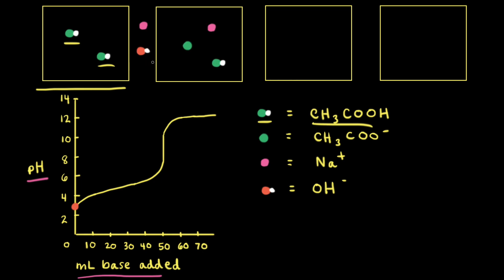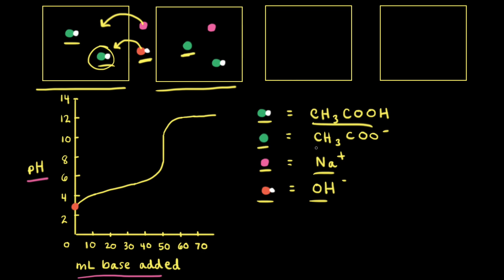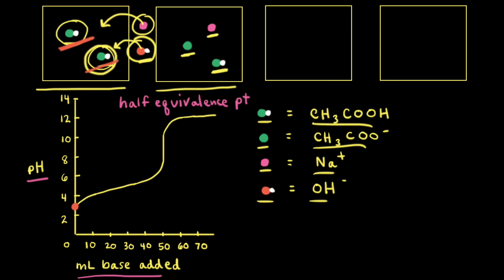Next, let's add some sodium hydroxide to our initial solution of acetic acid. The pink sphere represents a sodium cation, so we add a sodium cation and a hydroxide anion. From our net ionic equation, the hydroxide anion reacts with acetic acid to form the acetate anion and water. Since water is left out, we see the acetate anion that formed along with the remaining acetic acid particle. Because half of the initial acid has been neutralized, this second particulate diagram represents the half equivalence point.